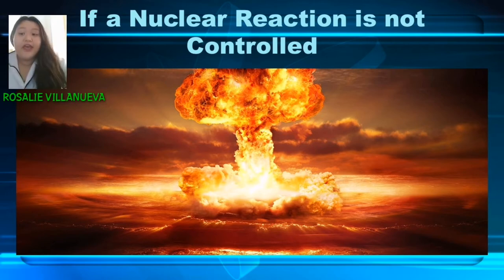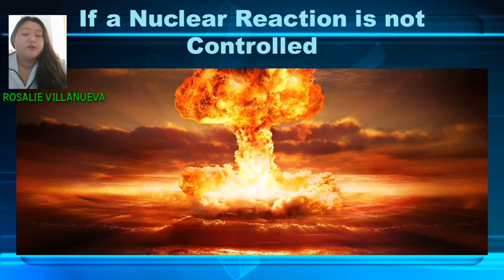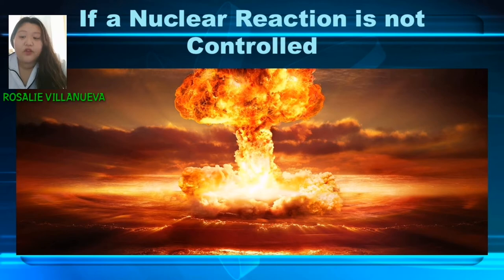The only way to control or stop a nuclear chain reaction is to stop the neutrons from splitting more atoms. Control rods made of neutron-absorbing elements such as boron reduce the number of free neutrons and take them out of the reaction. In that case, the chain reaction stops.